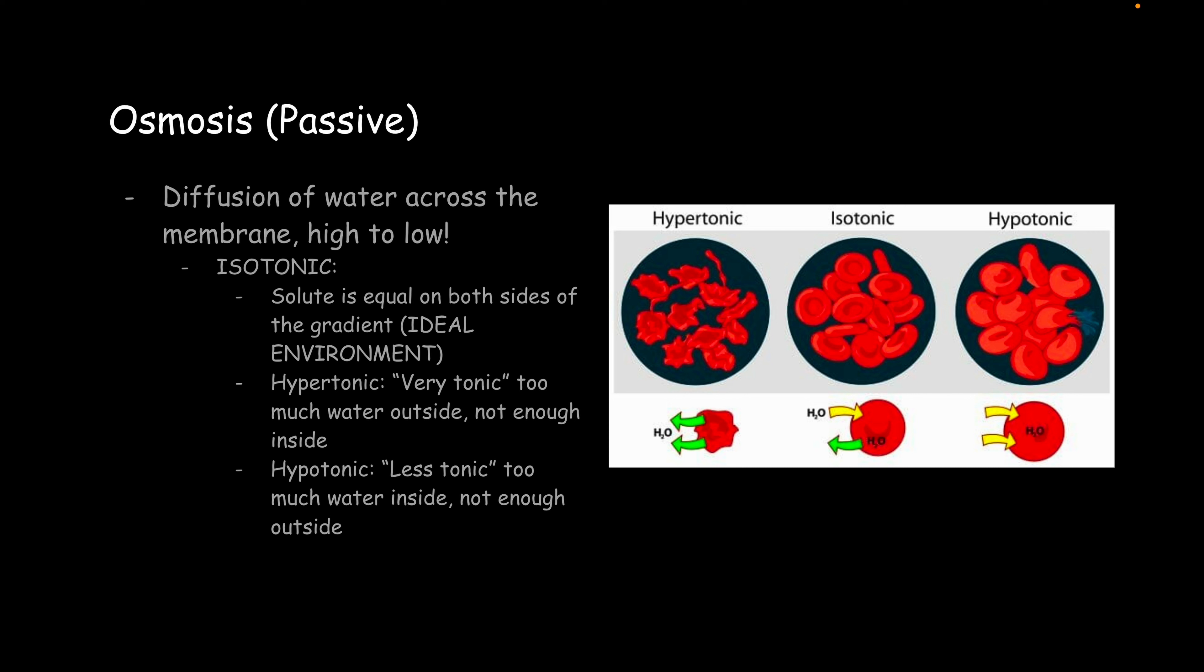This is just the basics for now. Osmosis is something that you could spend a whole day on in a classroom. It's that important to understand. Hypertonic means there's a lot of solute on the outside, and that's going to cause your cell to shrink. You have isotonic, which is a balanced state of water coming in and out of the cell. You have hypotonic. That means there's a lot of solute inside the cell, so water is going to follow.